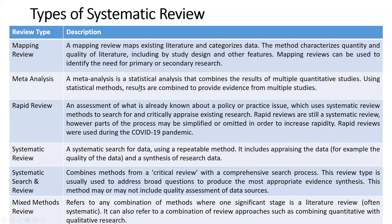Here I have tried to explain the various types of systematic reviews. Basically there are around 30 types of systematic review, but I have chosen some that are most relevant. The first one is mapping review. A mapping review maps existing literature and categorizes data — it categorizes the quantity and quality of the literature and includes study design and other features. Mapping review can be used to identify the need for primary and secondary research.